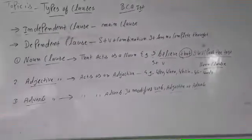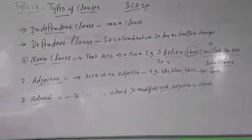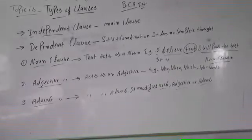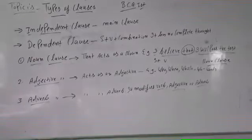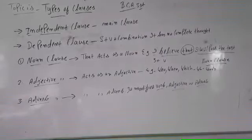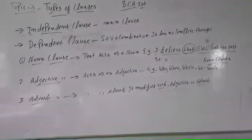The second is the adjective clause. Adjective is vishishna. That acts as an adjective. The adjective is a character, for example who, which, when, how. These are the examples.